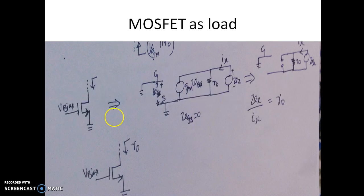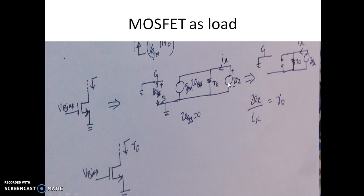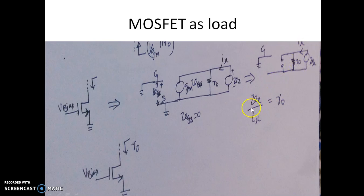For lambda non-zero, if you look from the drain: gate is grounded, source is grounded, so Vgs = 0 and the current source is an open circuit. Then Ix = Vx/R0, meaning Vx/Ix = R0. So looking from the drain of an NMOS with lambda non-zero, the resistance is R0 (not infinity as when lambda = 0).